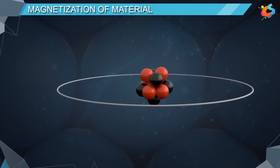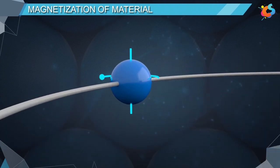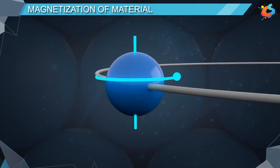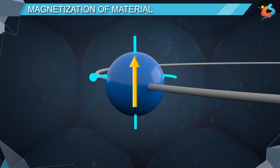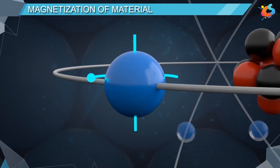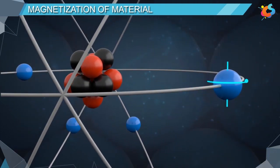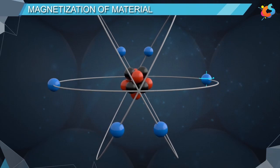Besides the orbital motion, the electrons also have a spin motion along an axis, similar to Earth's rotation. This spin also constitutes a magnetic moment which has a fixed magnitude of 9.285 × 10⁻²⁴ joule per tesla. The nucleus has a magnetic moment, but it is very negligible when compared to that of electrons.